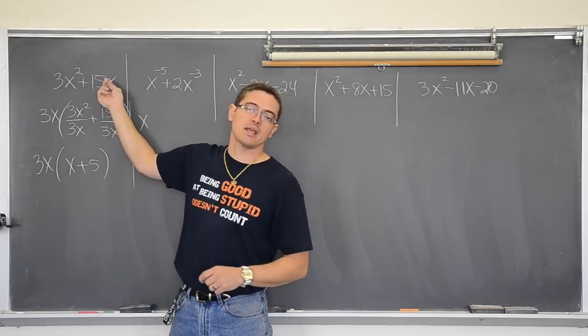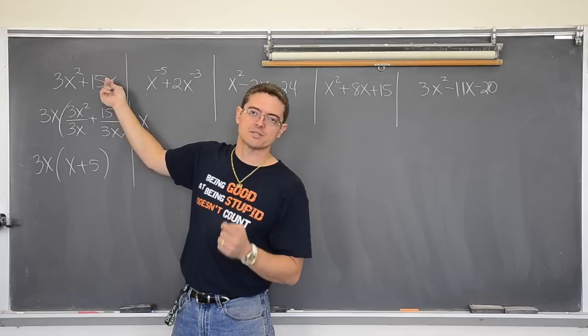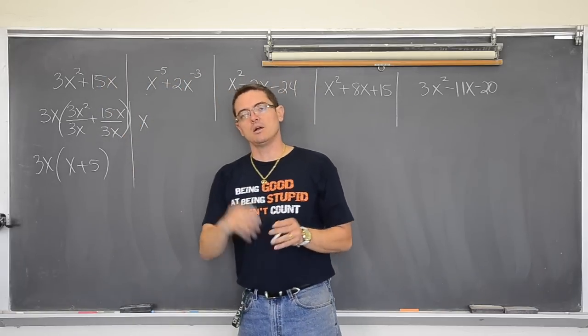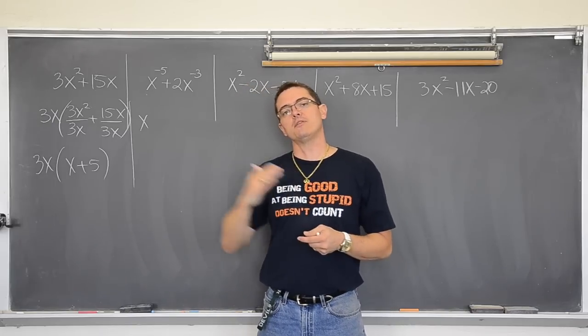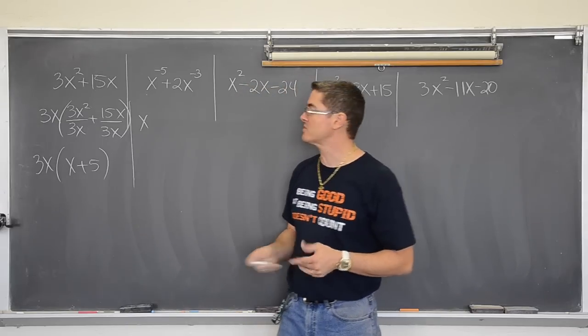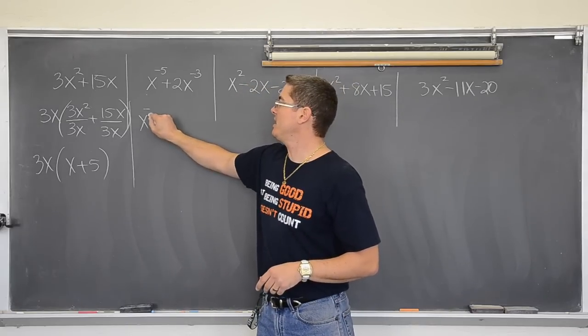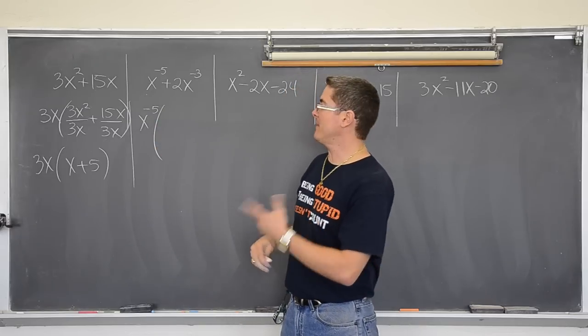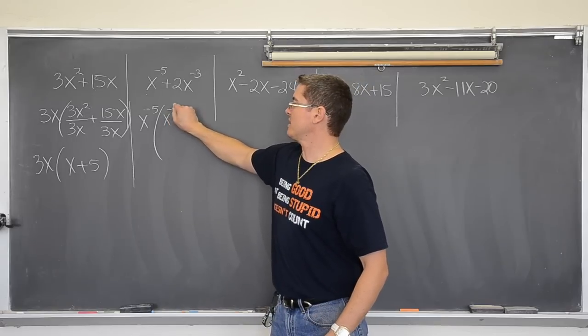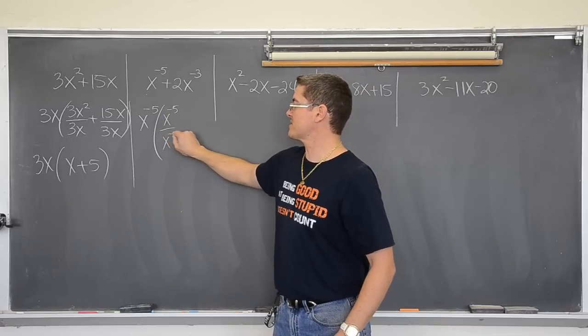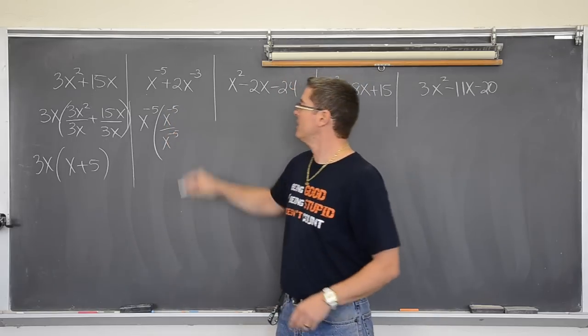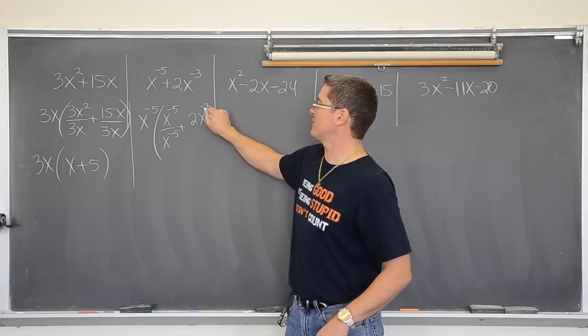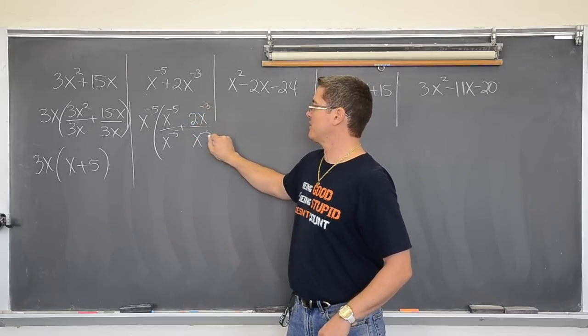This has 2 to give up but this only has 1. The lowest exponent. Well what is lower? Negative 5 or negative 3? On the number line, negative 5 is farther to the left. Negative 5 is a smaller exponent. So that is how many we are going to take out. So we get x to the negative 5th is going to come out of x to the negative 5th over x to the negative 5th. I am dividing out. Plus 2 times x to the negative 3rd divided by x to the negative 5th.